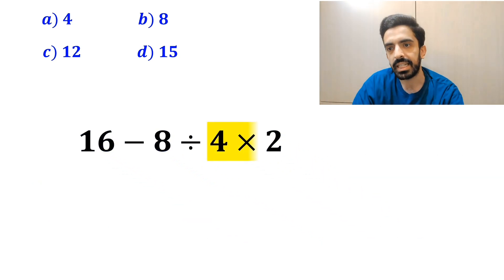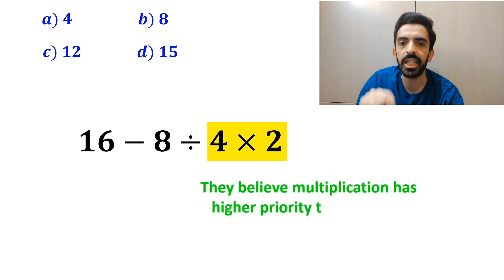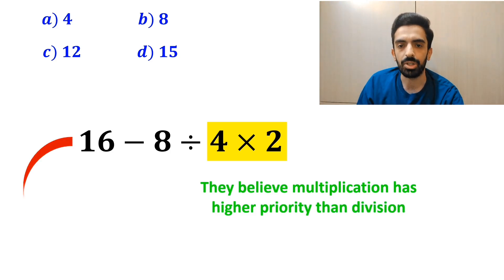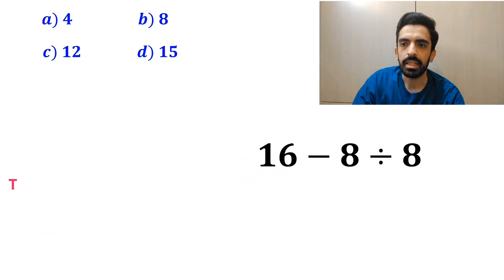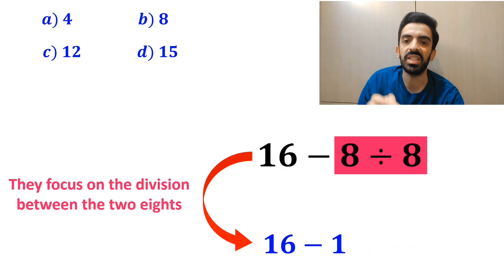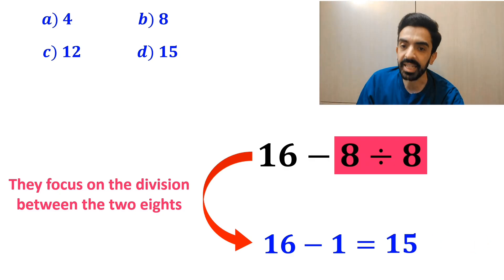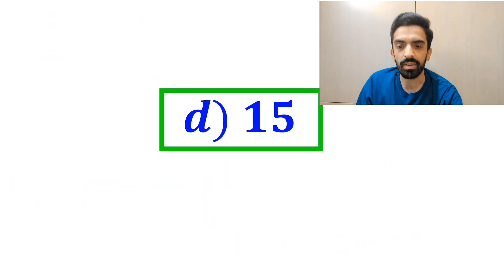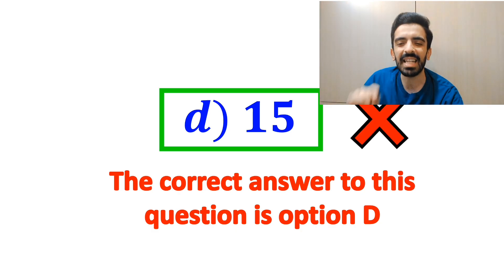Then they perform the multiplication between 4 and 2, because they believe multiplication has higher priority than division. So they write the expression as 16 minus 8 divided by 8. In the final step, they focus on the division between the two 8s and replace this expression with 16 minus 1, which equals 15. And immediately they conclude that the correct answer is option D. However, this answer is absolutely wrong.